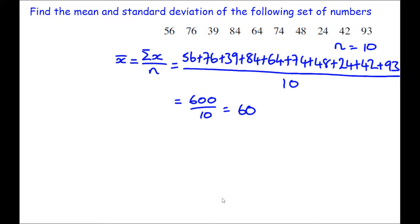The mean should be something that represents the middle of the data, the average of all the data points that you have. 60 sounds good.